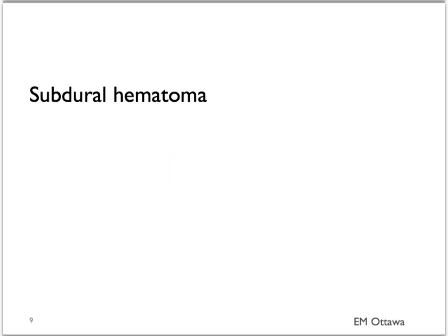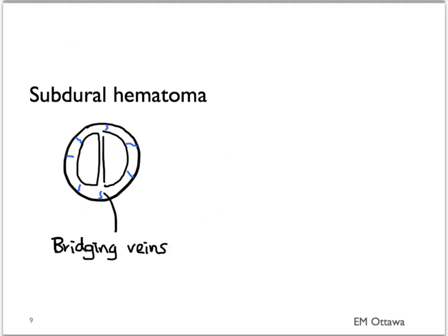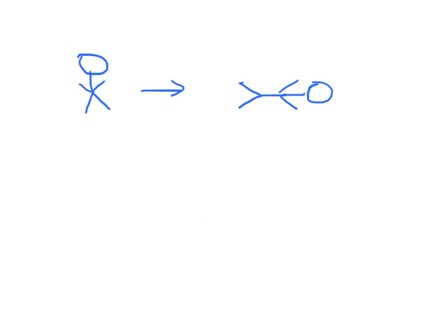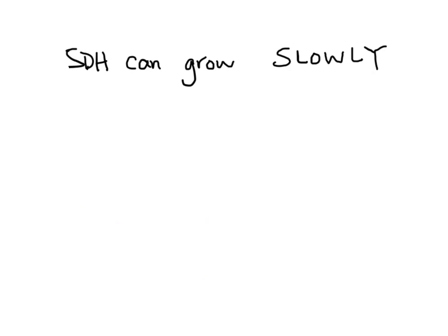Subdural hematomas are bleeding from bridging veins in the dura. When there is rapid acceleration-deceleration of the head, that can shear these veins, causing bleeding. Subdural hematomas can be caused by falls, and no direct head trauma is needed. Since the bleeding is venous, it is low pressure in nature, and therefore a subdural hematoma can grow slowly. Patients who are on anticoagulants will be more susceptible to developing subdural hematomas.